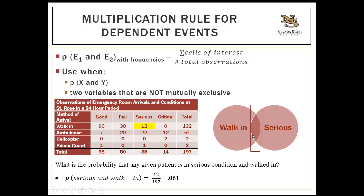Previously when we looked at 'good condition or ambulance,' we tried to remove those who experienced both. Now we want to know the proportion that experienced both. We want to know how likely the intersection of the two events is. For example: what's the probability that any given patient is in serious condition and walked in? Look at where walk-in and serious condition intersect — 12 patients — divided by total 197 patients gives 0.061.